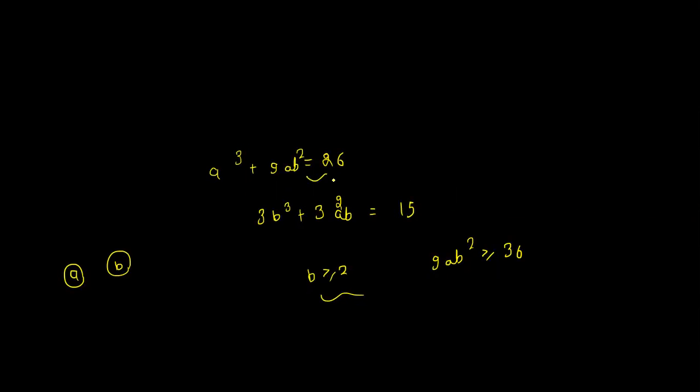So here we have 3b cubed plus 3a squared b is equal to 15. So a squared is equal to 4.